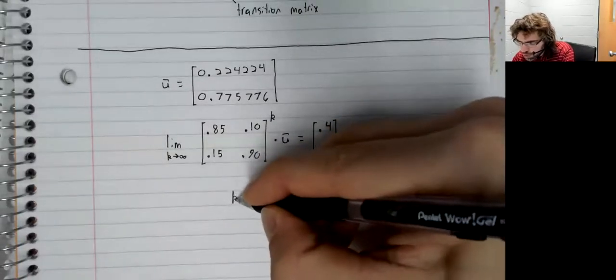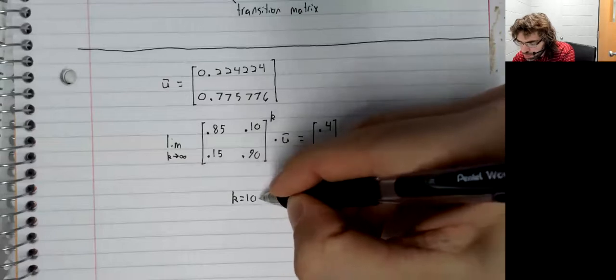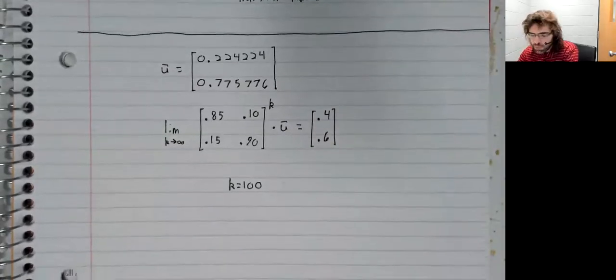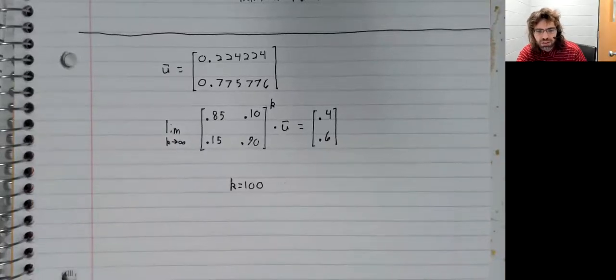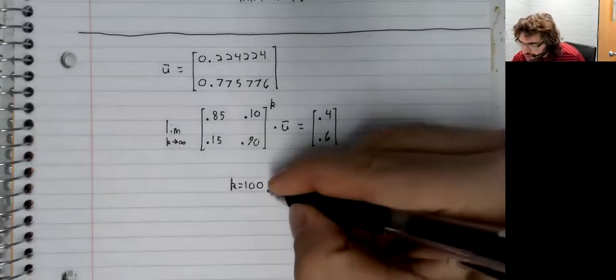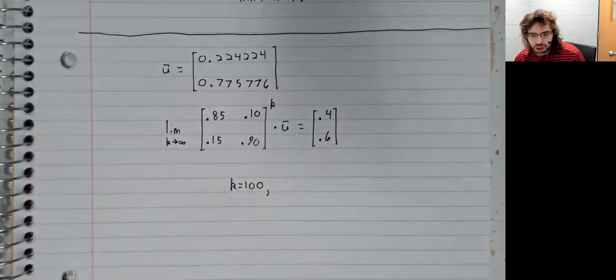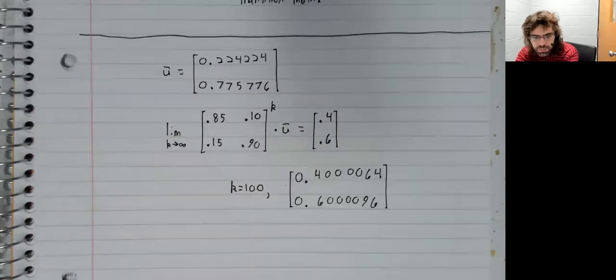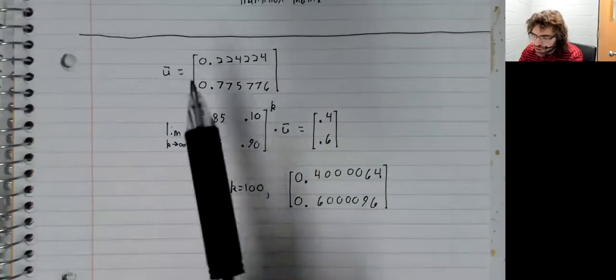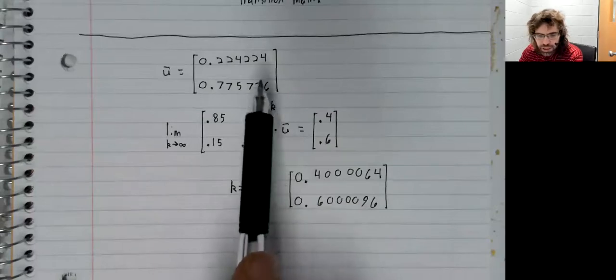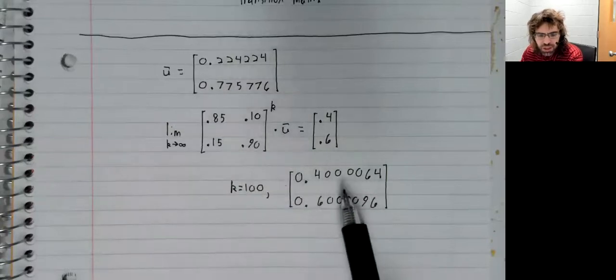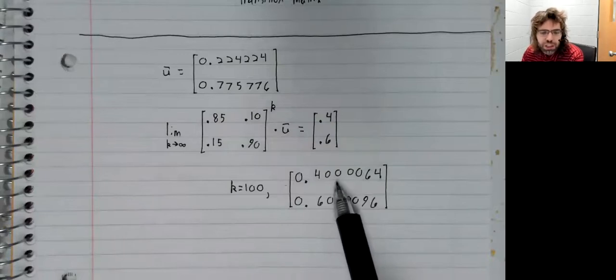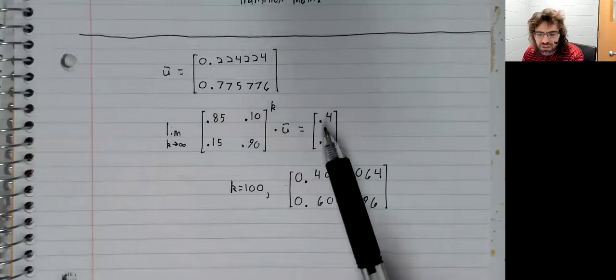We don't really have any good way of computing this limit, but we can let k be a large number and see what happens. If we let k be 100, this matrix to the power of 100 times this initial probability distribution gives us this probability distribution, so very close to the steady state.